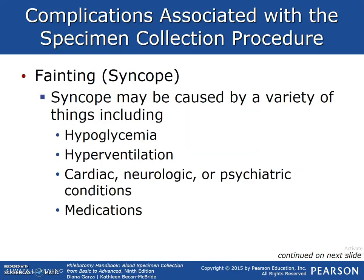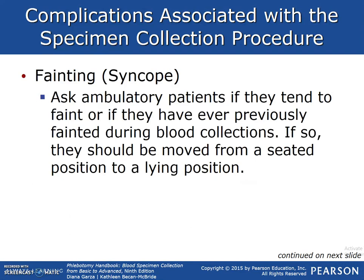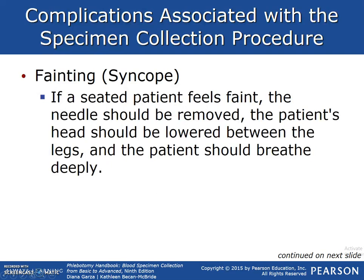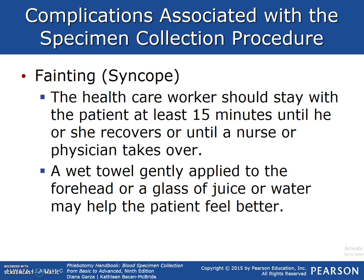Syncope can be caused by a variety of reasons: hypoglycemia or low blood sugar, hyperventilation, cardiac, neurological, or psychiatric conditions, and medication levels. We're going to ask ambulatory patients if they tend to faint or have previously fainted during a blood collection — this is that question: have you had your blood drawn before, and if so, how did it go? This would prompt them to let us know so we can have them in a lying-down position on an exam table. If a seated patient feels faint, the needle should be removed, the patient's head lowered between the legs, and the patient should breathe deeply. The healthcare worker should stay with the patient at least 15 minutes until he or she recovers or until a nurse or physician takes over. A towel gently applied to the forehead and a glass of water may help — we give water because we don't know if the patient is diabetic.